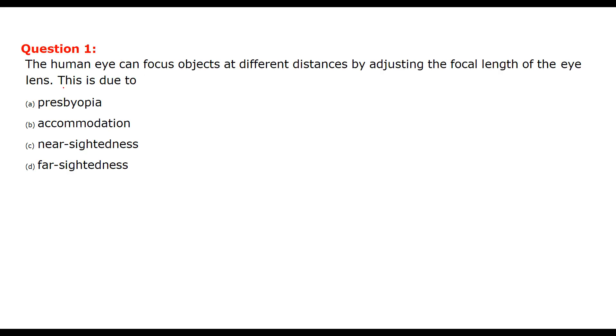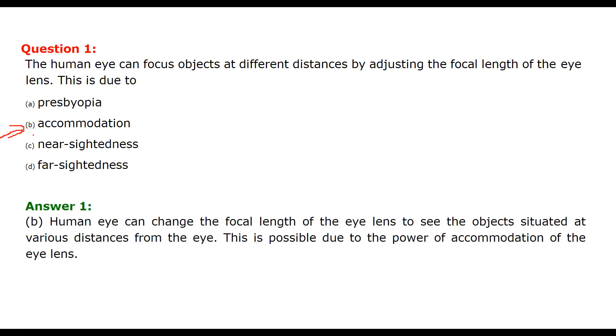The first question is: the human eye can focus objects at different distances by adjusting the focal length of the eye lens and this is due to accommodation. So we will choose this option.